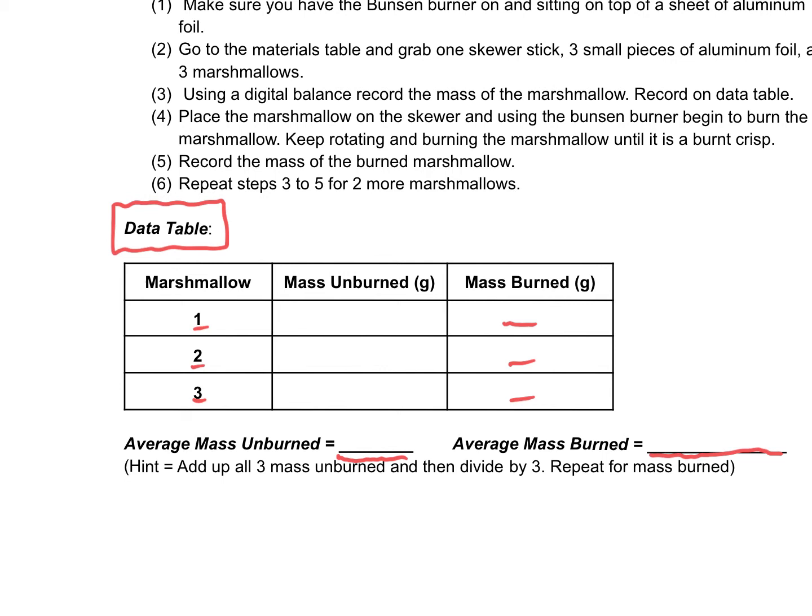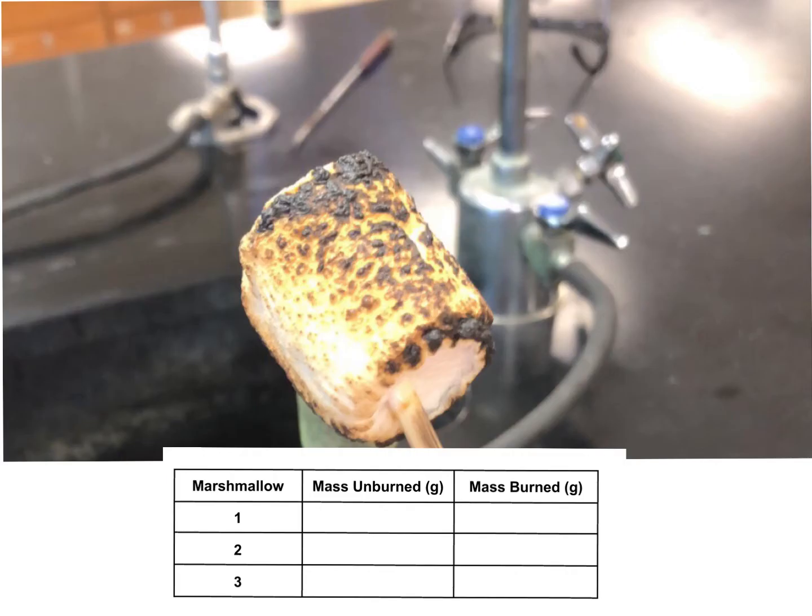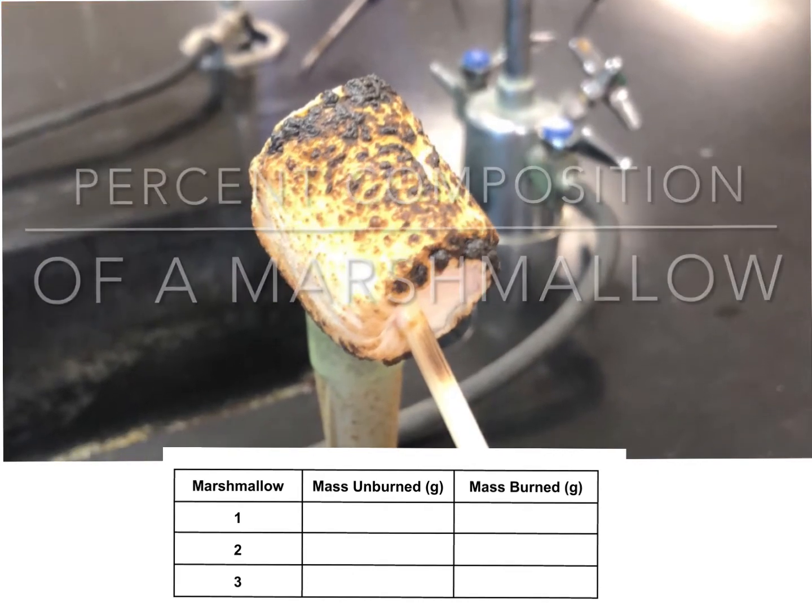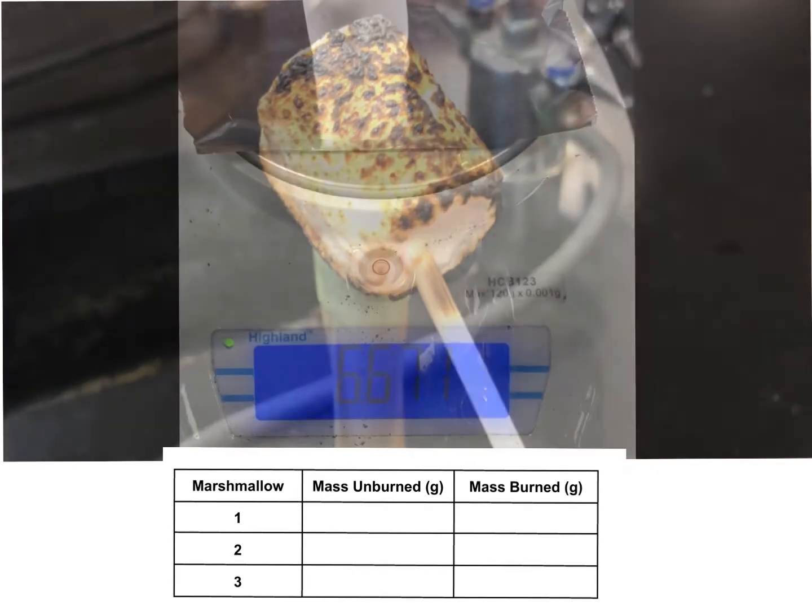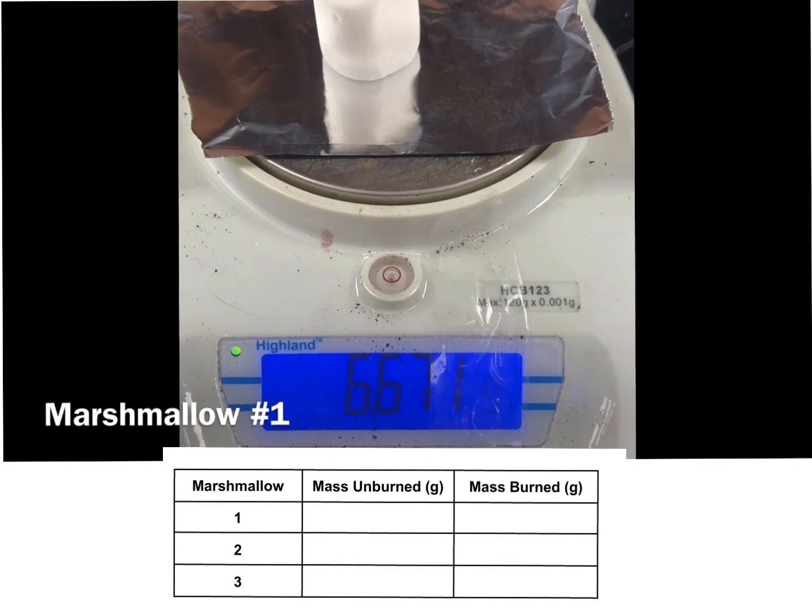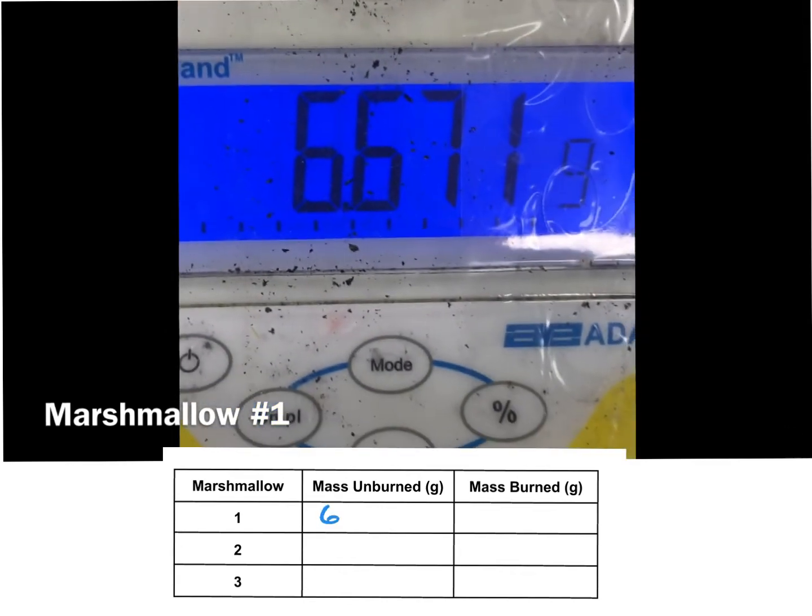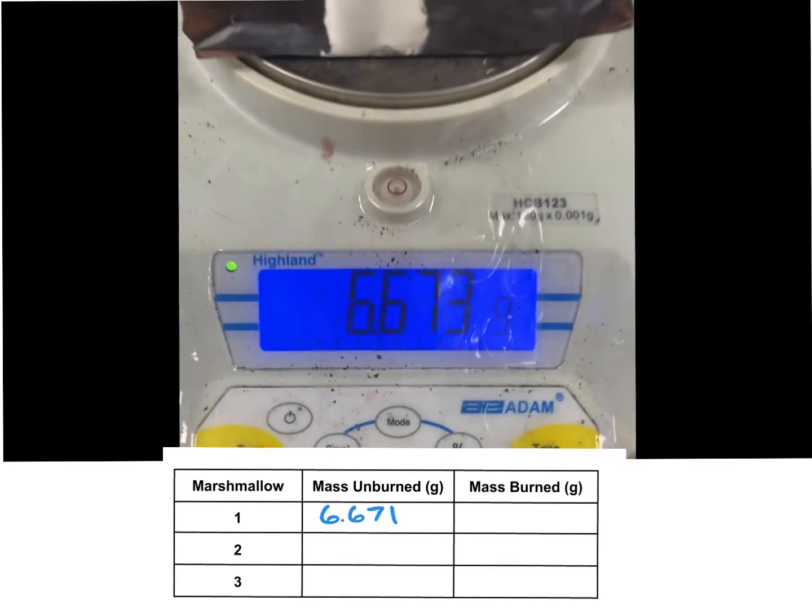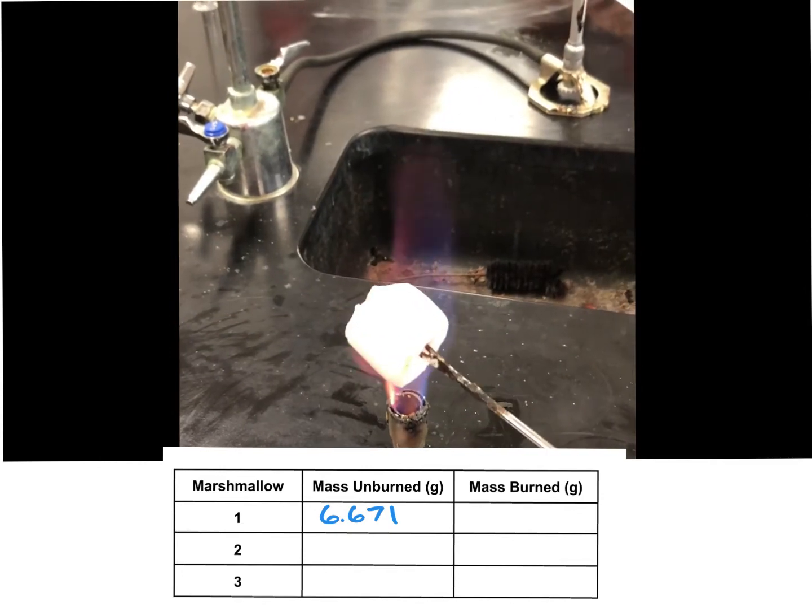But we're going to go ahead and we are going to watch a video and fill out the data table. Looking at percent. So let's begin. Let's do the lab. Percent composition of a marshmallow. Okay, so our first marshmallow has a mass of 6.671 grams. Then we're going to burn it.